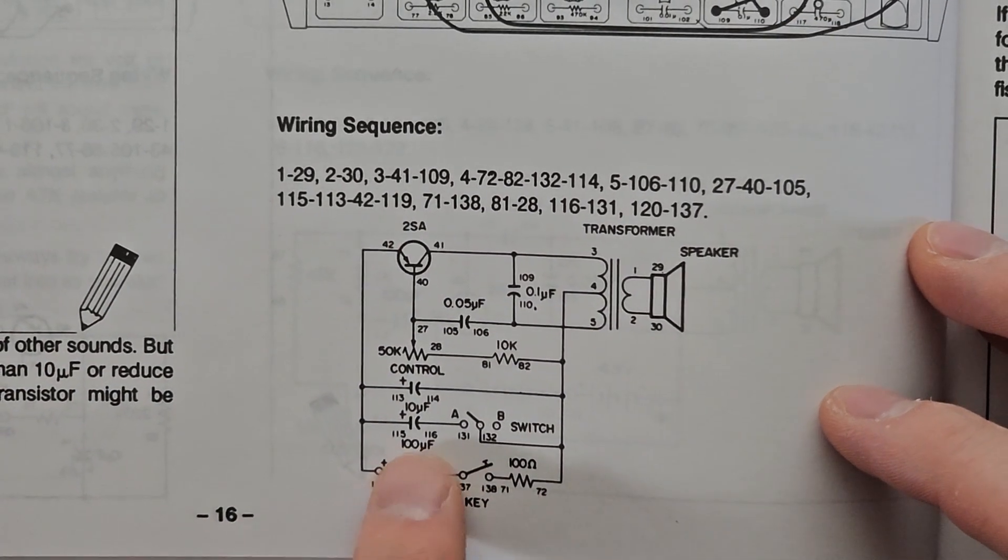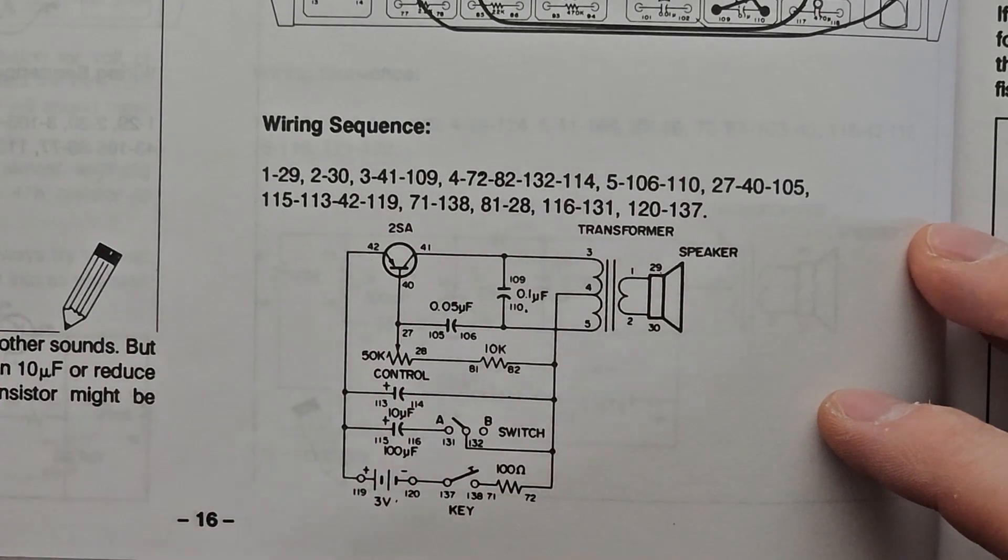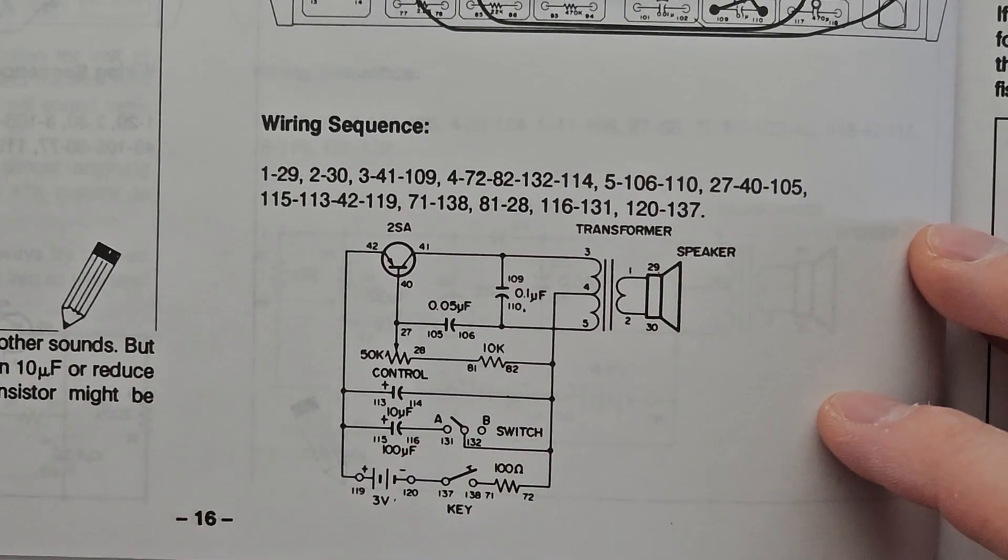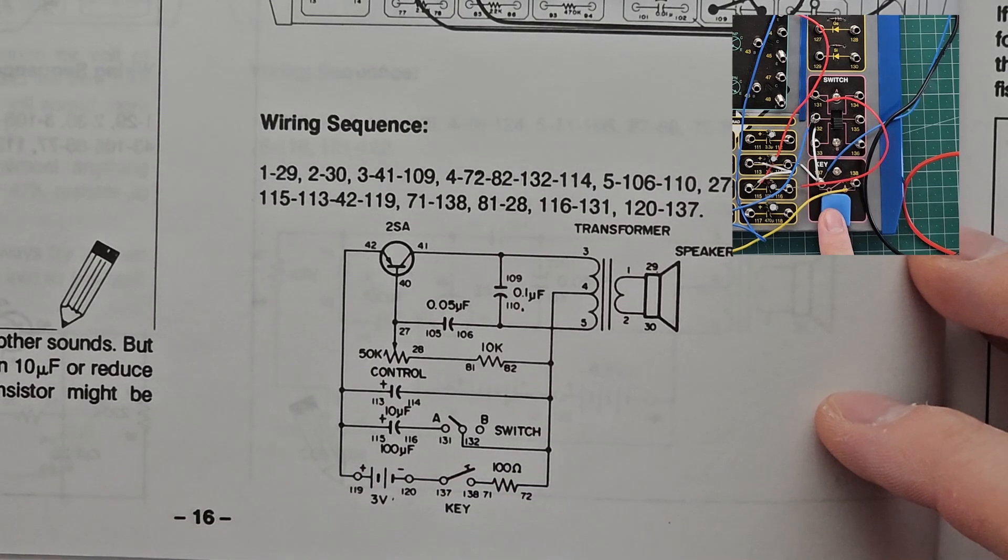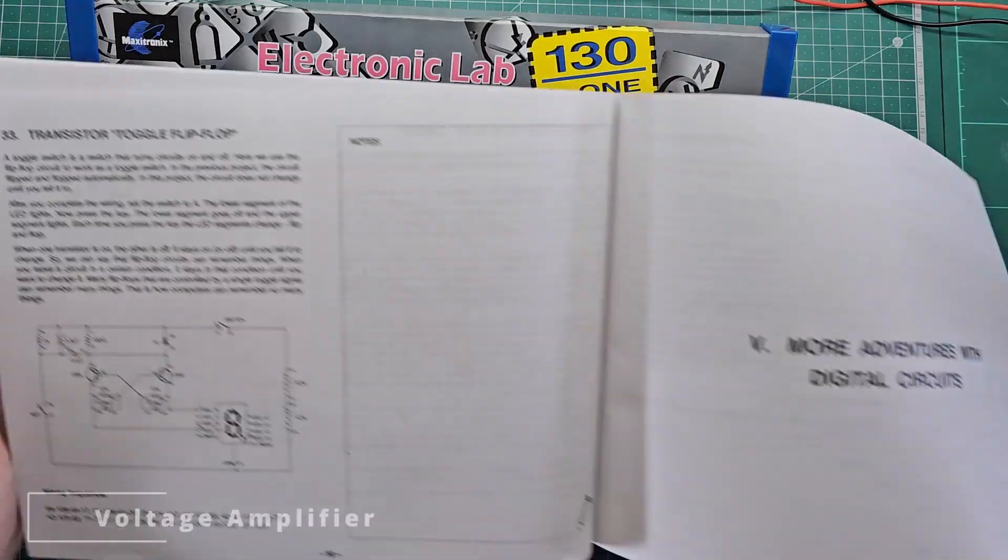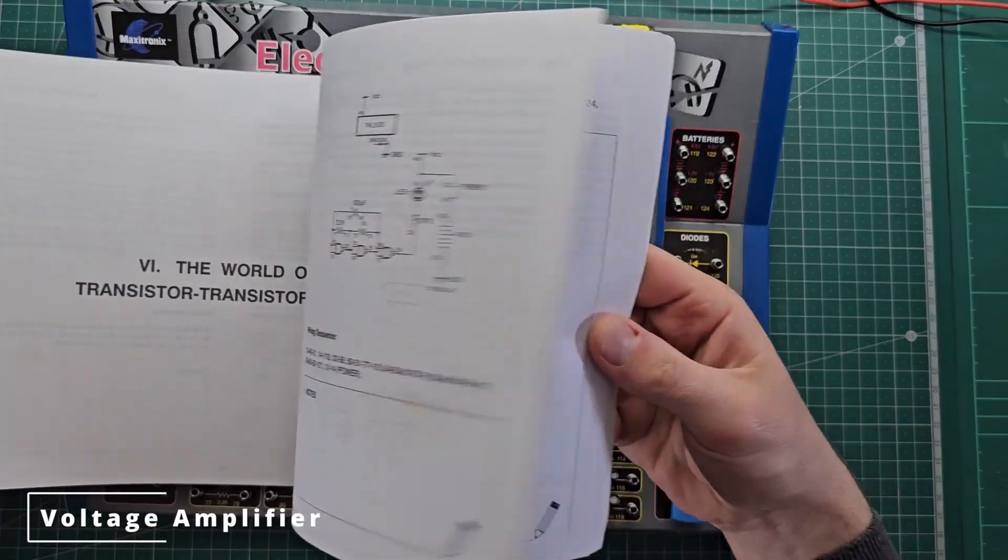There's also a capacitor in parallel with the whole circuit. When we switch it on it causes a slow decay of the noise, and when we switch it off it just drops off instantly. Okay, let's do something a little bit more complicated next.